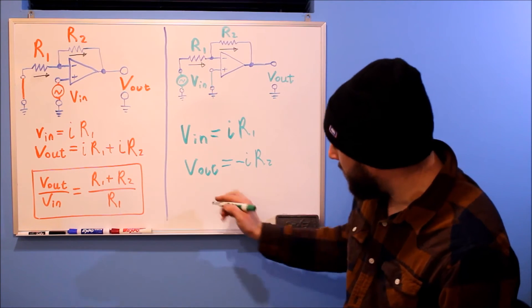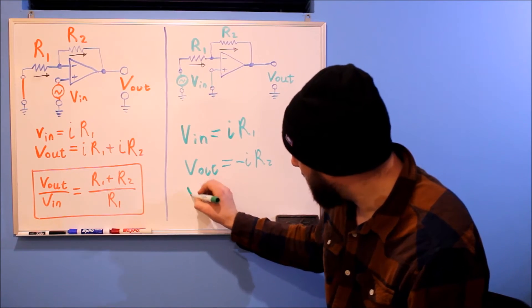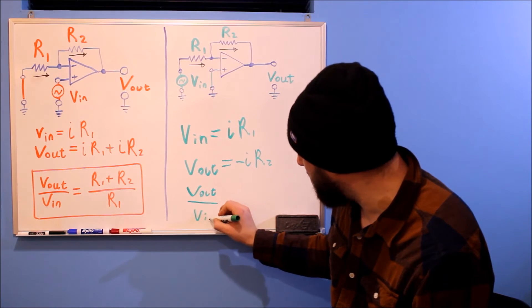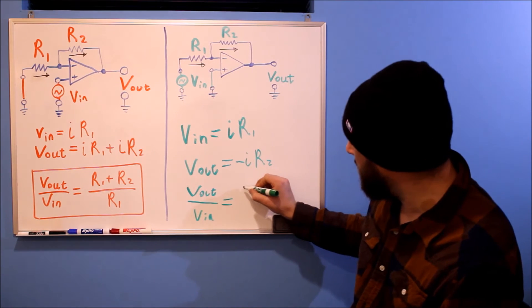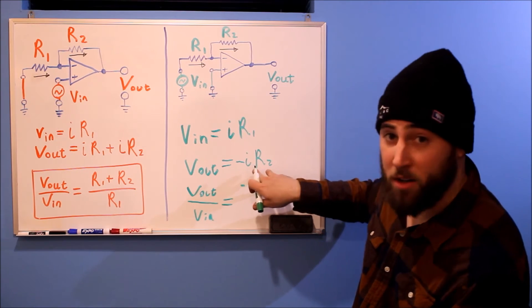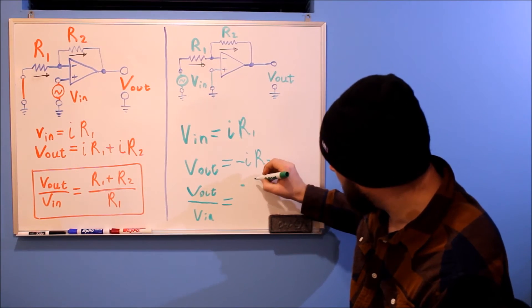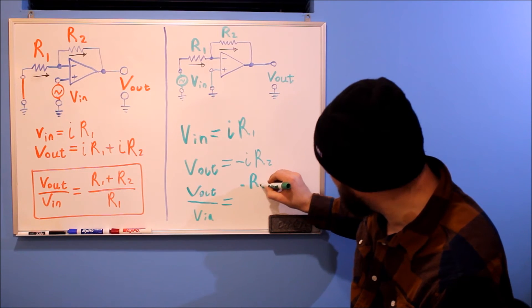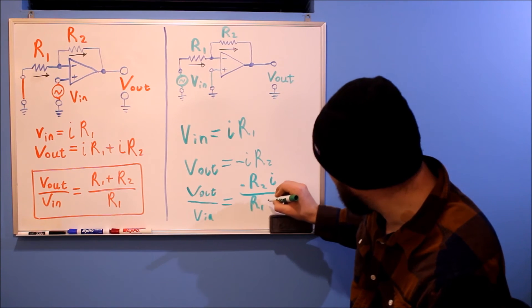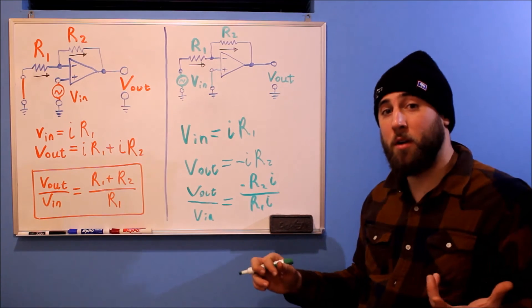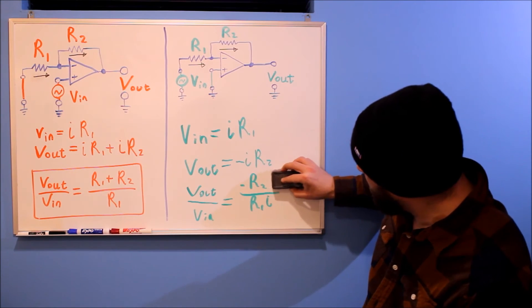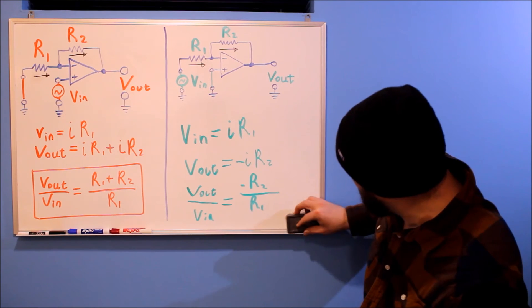So this makes the transfer function really easy. Vout over VN is equal to negative, and I'm going to flip the R's and the I's. And just like before, we have I's in the top and the bottom, so they cancel out. And ta-da!